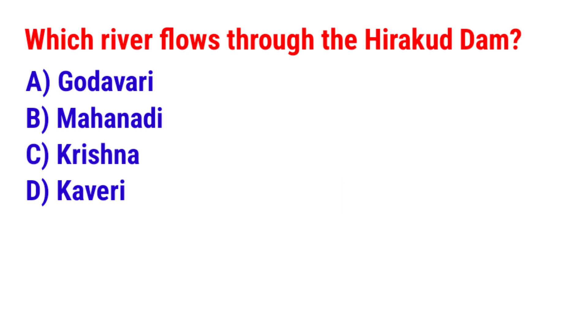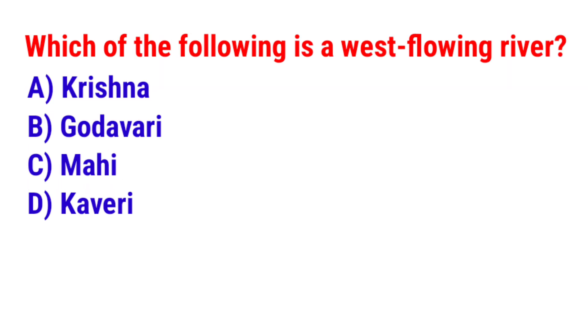The answer is option B, Mahanadi. Which of the following is a west flowing river?